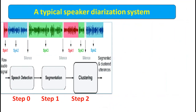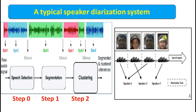Here comes a typical speaker diarization system, where a raw signal is passed into a speech detection system, and it segments it into different paths. After that it is sent into a clustering stage, where segmented and clustered utterances occur. Here we see three people who speak simultaneously, but after a diarization task, they are divided into speaker one, speaker two, and speaker three.